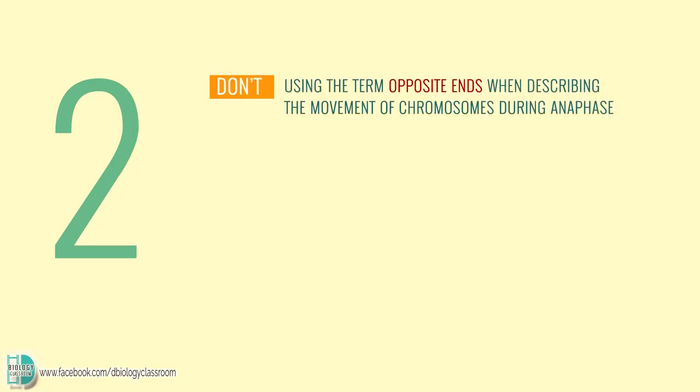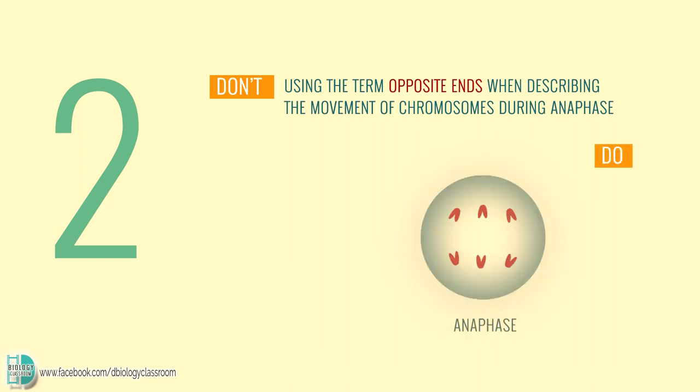Number 2: using the term 'opposite ends' when describing the movement of chromosomes during anaphase. The proper term to use is 'poles'.